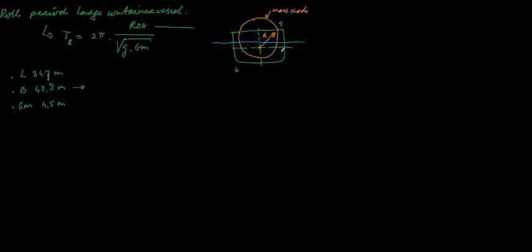So typically we know that the radius of gyration is 0.35 times the width of the vessel, and in our case that would be 0.35 times 42.8 equals 14.98.